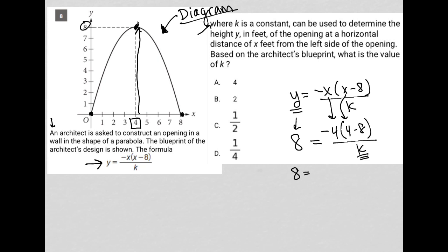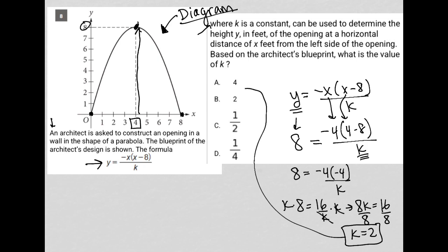So, I have 8 equals negative 4. I'm doing my order of operations. So, inside the parentheses, I have 4 minus 8. So, that's another negative 4 over k. So, this becomes 8 equals positive 16 over k. I can multiply both sides of my equation by k, leaving me with 8k is equal to 16, because these k's cancel out. And then I can divide both sides by 8, and I get that k is equal to 2. So, the correct answer to this question is 2. That is answer choice B.